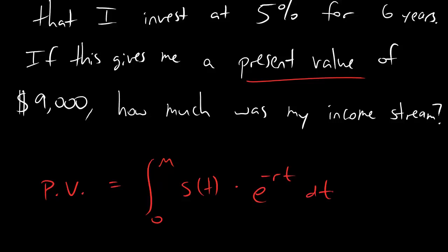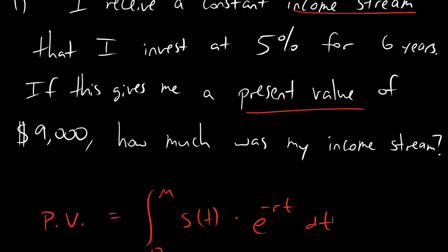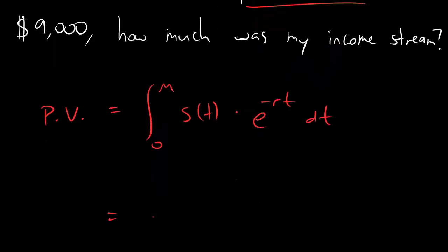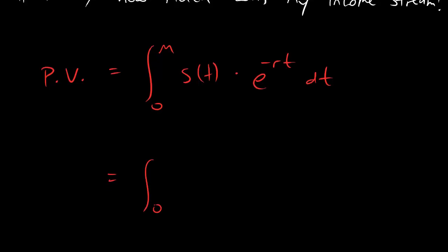Okay, now as always, because we know we want to use this formula, let's see what we can plug in. The first thing we can plug in is the fact that the interest rate is 5%. So this becomes integral 0 to m, S(t), e to the minus 0.05t dt.